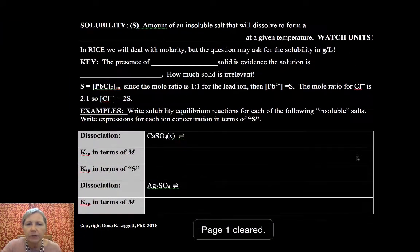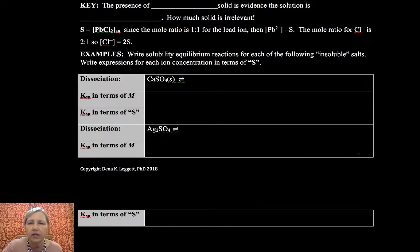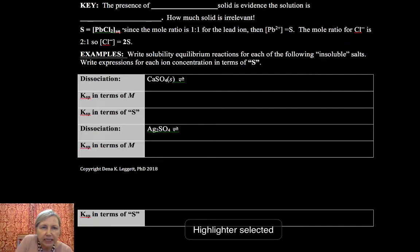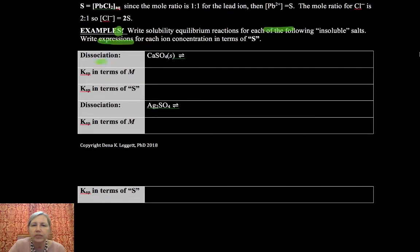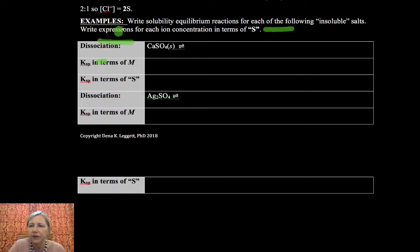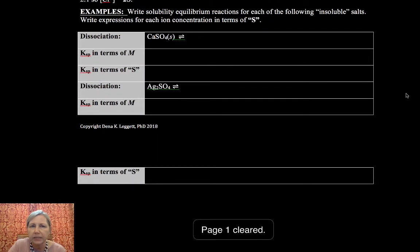Okay, so that's why I have S here and 2S for my chloride. Hopefully that makes a little bit more sense of these notes here, that my solubility is equal to the aqueous lead chloride. That's a one-to-one mole ratio with lead ion and a two-to-one mole ratio with chloride ion. Okay, so let's do some examples and I'm going to be focusing in right now.